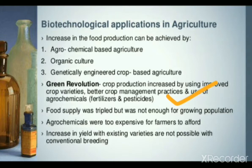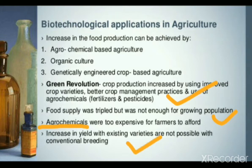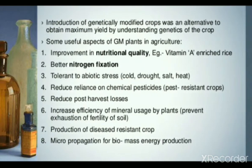Food ki supply green revolution ke through tripled hui, bahut zyada hui. Lekin din pe din hamari population increase ho rahi hai, so growing population ke liye bhi ye incomplete thi. Also, agro chemicals means fertilizer or pesticide use se soil fertility decrease hoti hai, aur farmers mostly afford nahi kar sakte because they are very expensive. Conventional breeding is also not good. So after these green revolution limitations, we then introduced genetically modified crops.